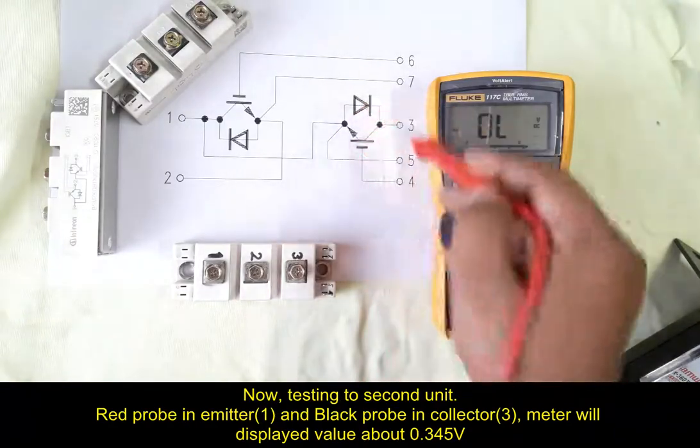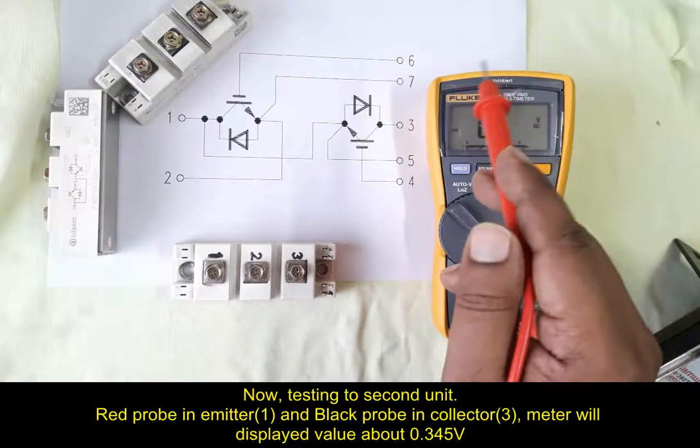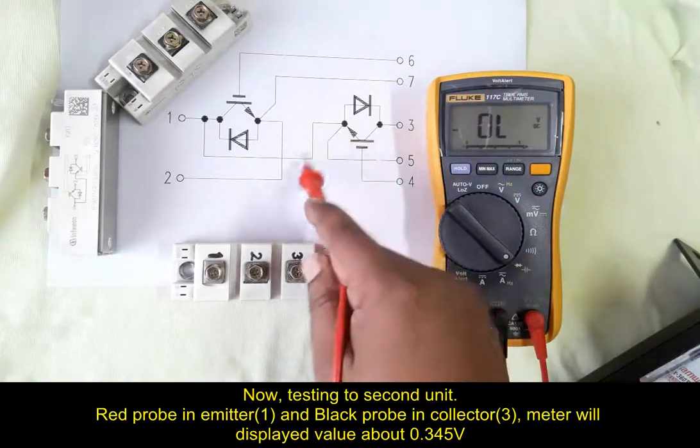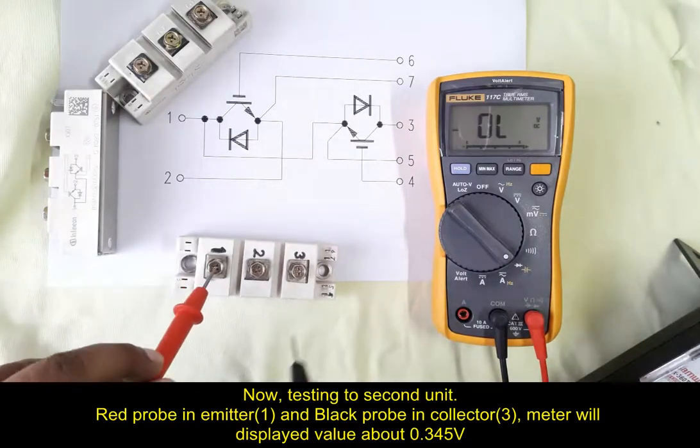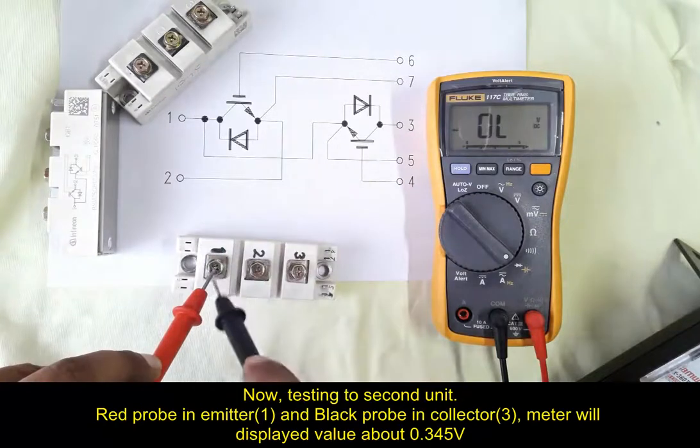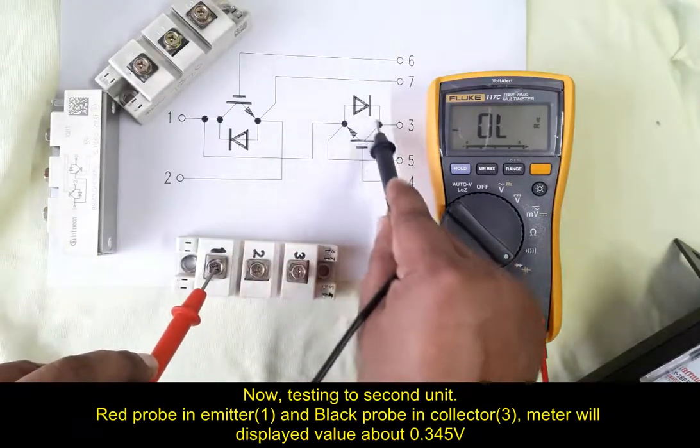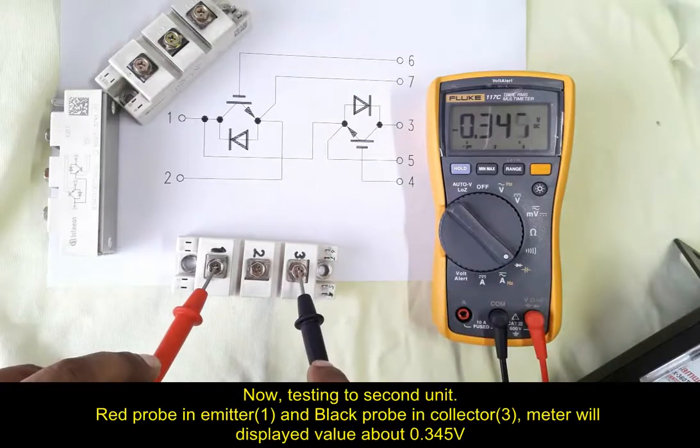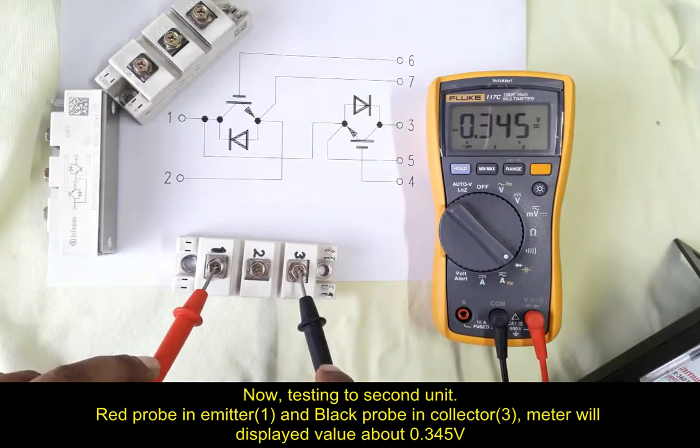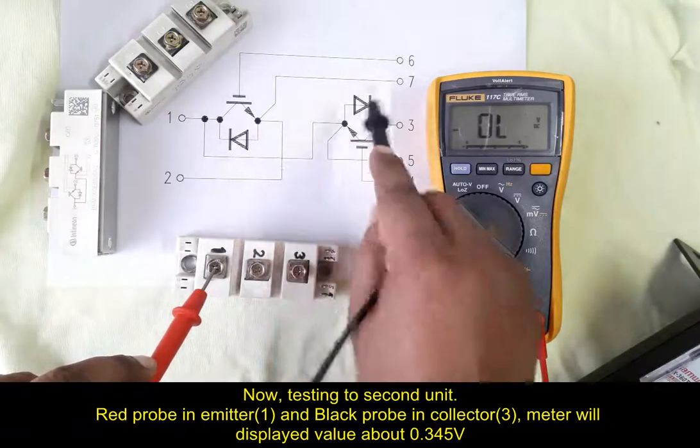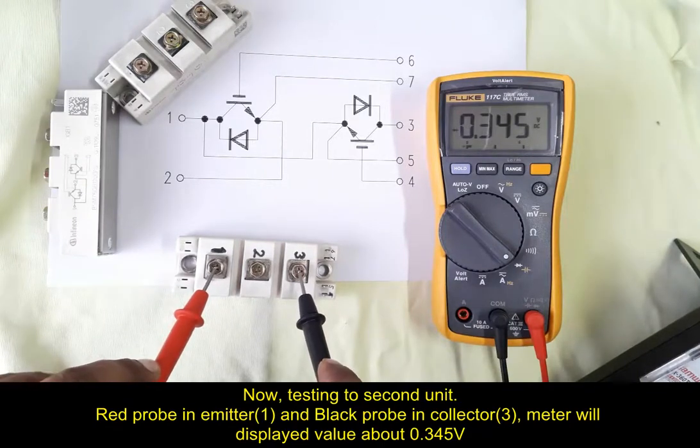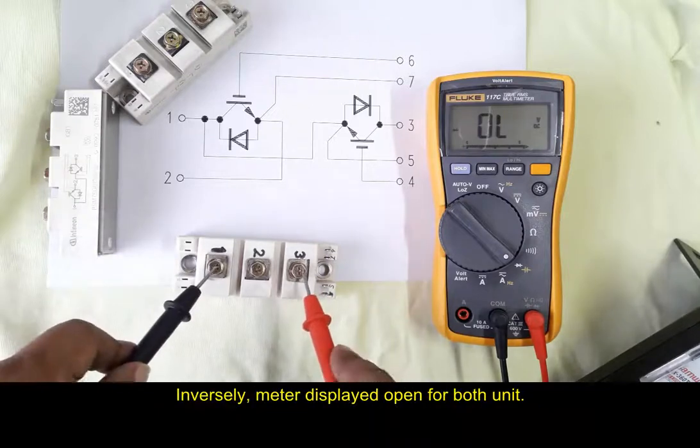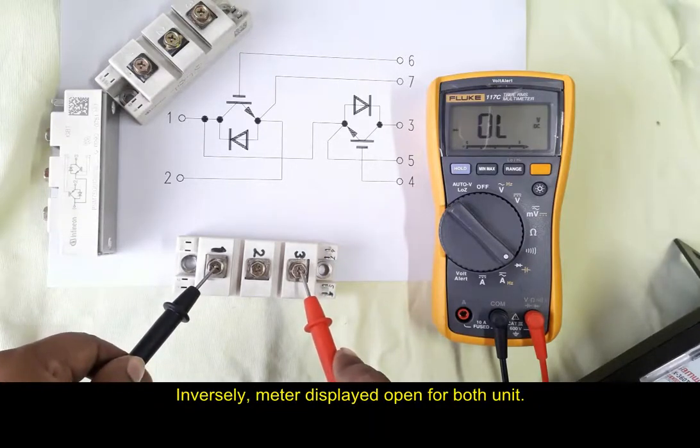Same testing on second unit of IGBT. Red probe in emitter 1 and black probe in collector terminal 3. Meter will display same as 0.345 volts. So here we're testing the internal diode and meter displayed about 0.345 volts. Inversely, meter displayed open for both units.